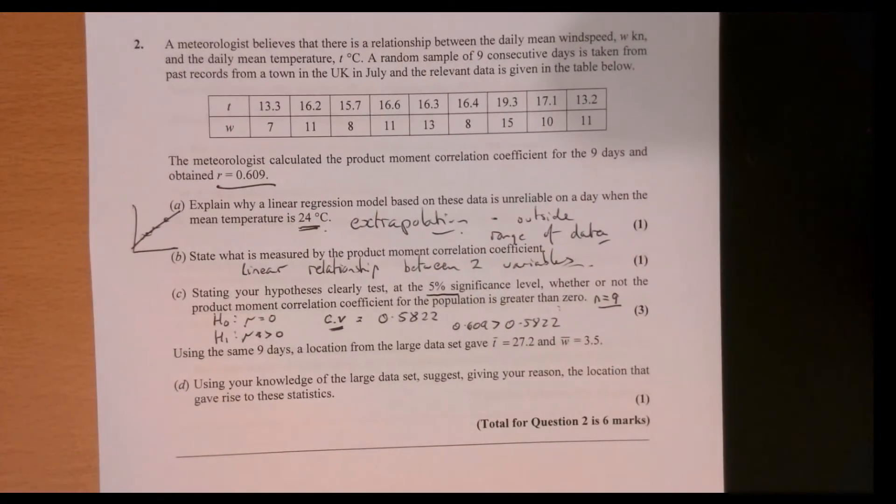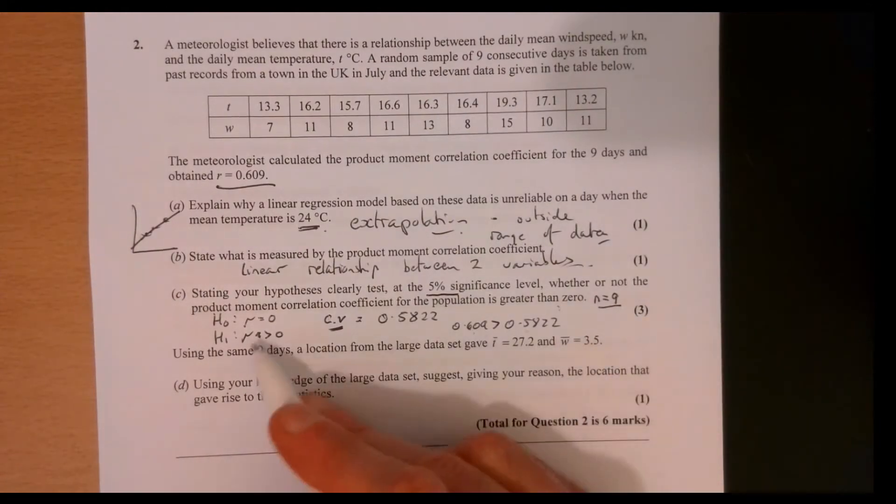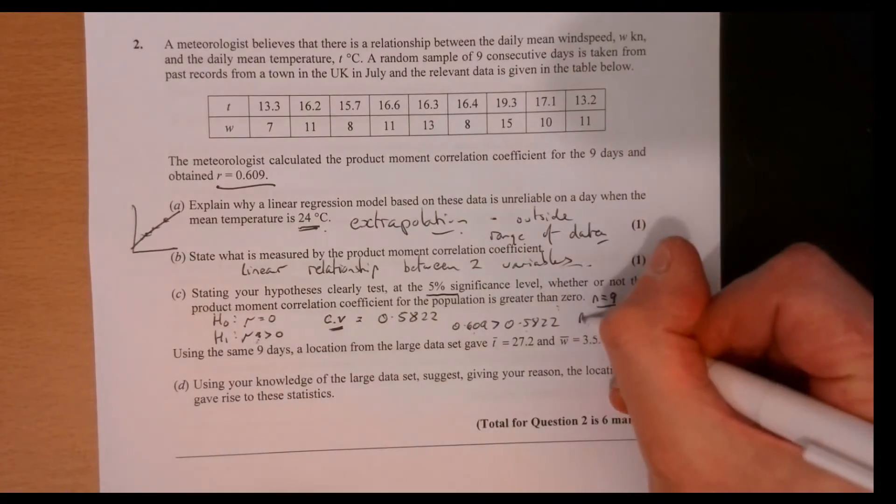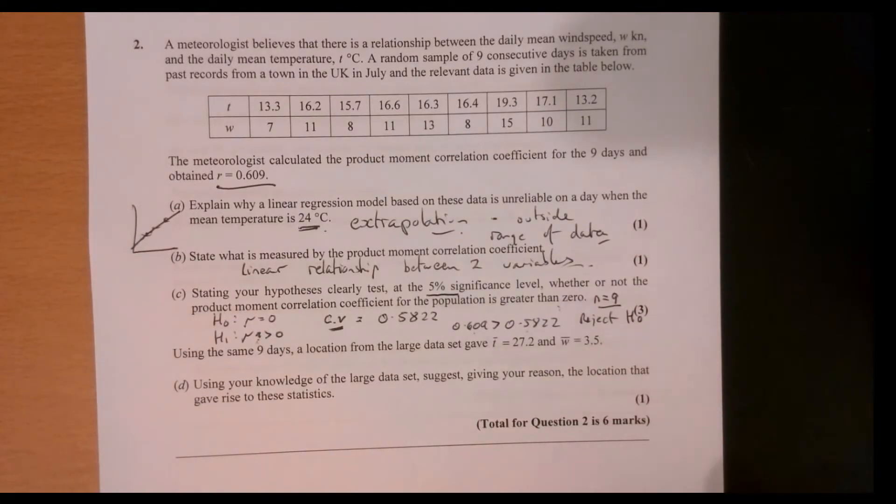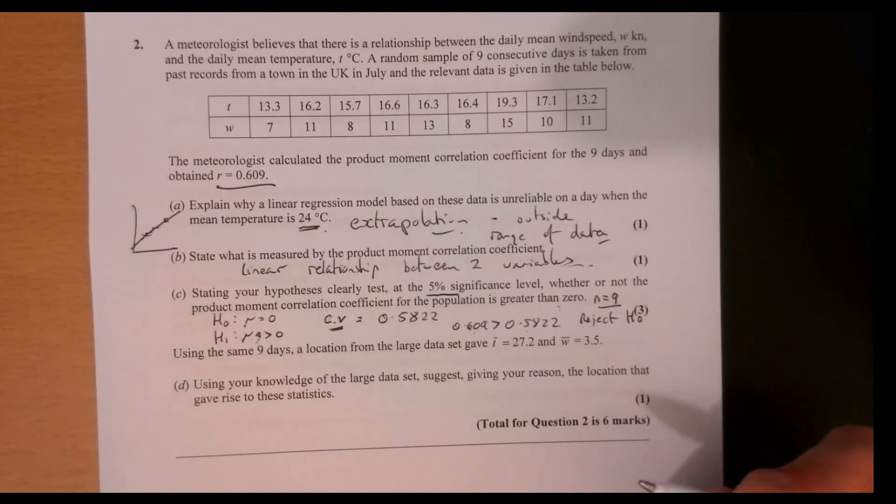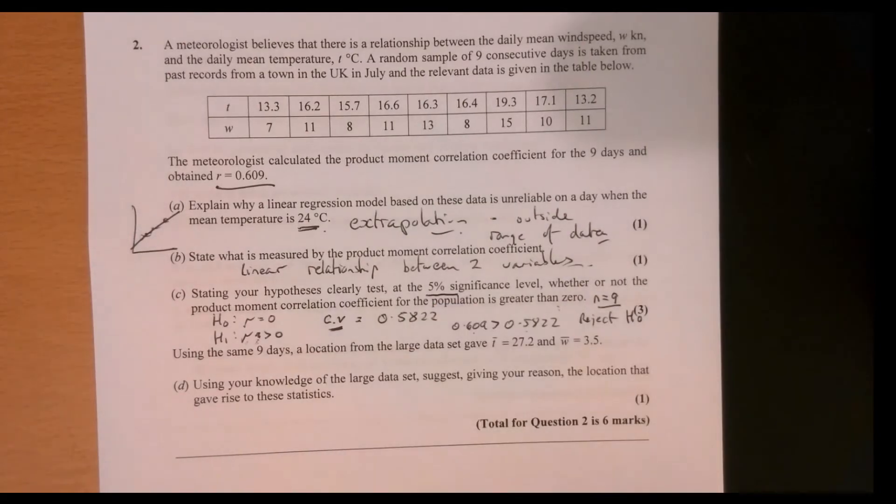And then we can say that, well, that does look like the alternative, doesn't it? OK, so we're actually going to reject the null hypothesis. And I want to write something like, there is evidence to suggest that the correlation is more than zero. OK, so do go in and actually write that bit in as well.